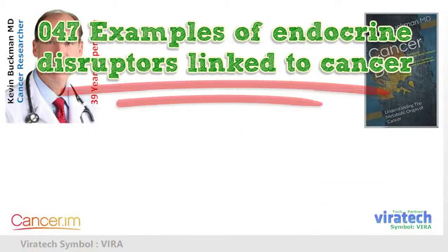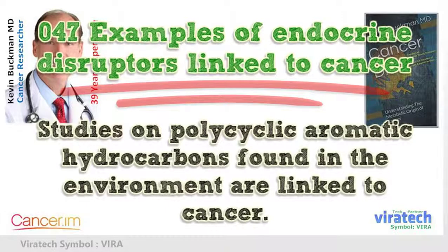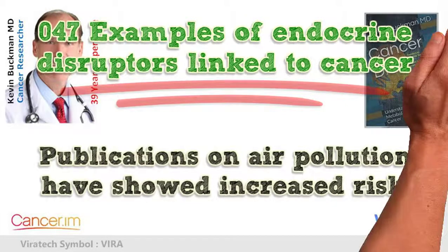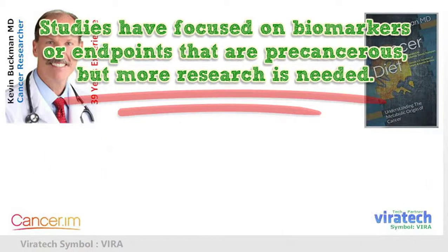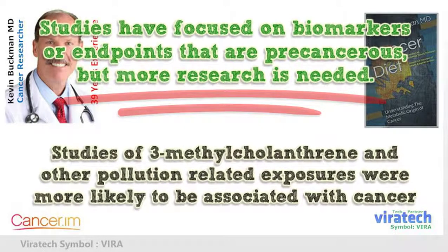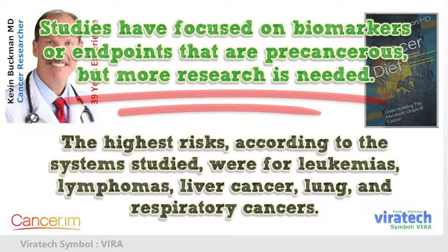Examples of endocrine disruptors linked to cancer: studies on polycyclic aromatic hydrocarbons found in the environment are linked to cancer. Publications on air pollution have showed increased risk. Studies have focused on biomarkers or endpoints that are precancerous, but more research is needed. Studies of 3-methylcholanthrene and other pollution-related exposures were more likely to be associated with cancer. The highest risks were for leukemias, lymphomas, liver cancer, lung, and respiratory cancers.